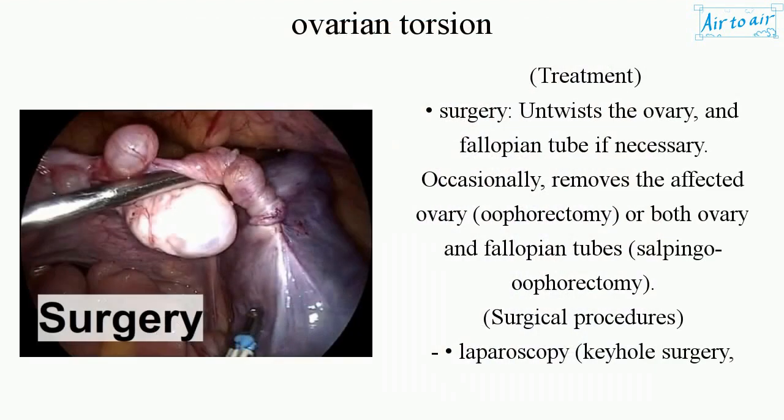Treatment involves surgery to untwist the ovary and fallopian tube if necessary. Occasionally, the procedure removes the affected ovary (oophorectomy) or both the ovary and fallopian tubes (salpingo-oophorectomy).